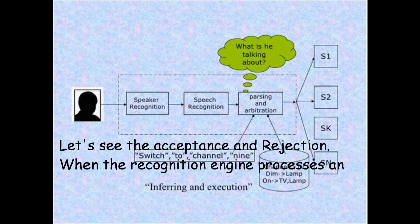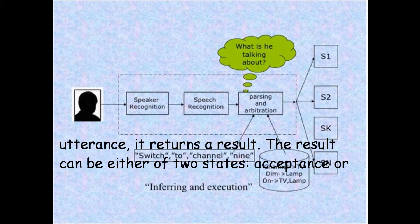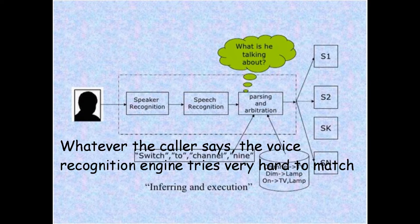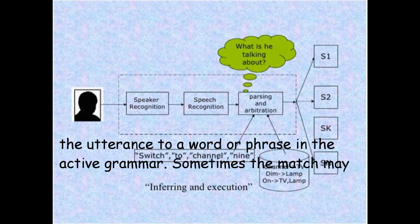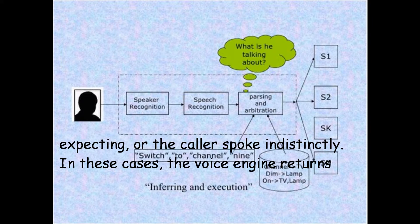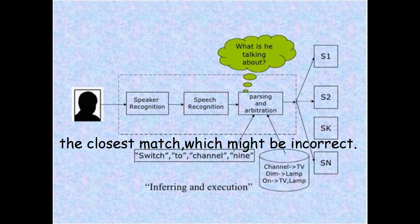Let's see the acceptance and rejection. When the recognition engine processes an utterance, it returns a result. The result can be either of two states: acceptance or rejection. An accepted utterance is one in which the engine returns recognized text. The voice recognition engine tries very hard to match the utterance to a word or phrase in the active grammar. Sometimes the match may be poor because the caller said something unexpected, or spoke indistinctly. In these cases, the voice engine returns the closest match, which might be incorrect.